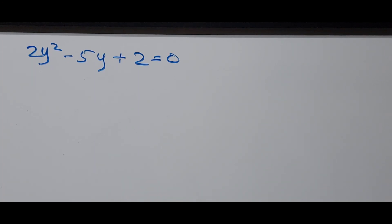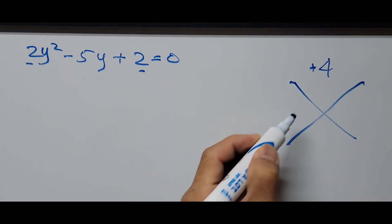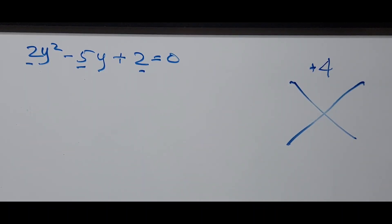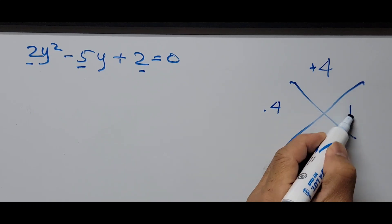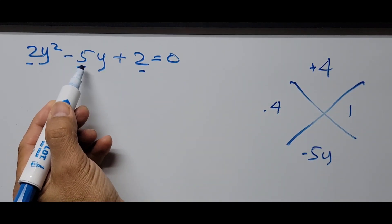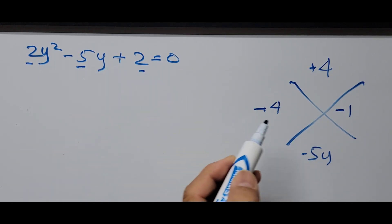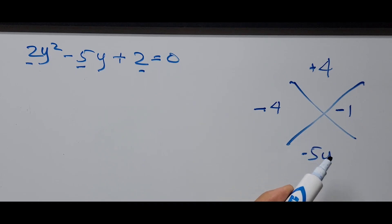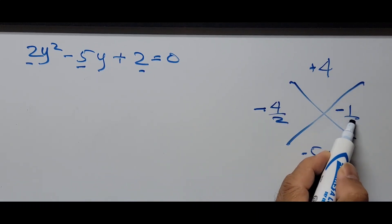I'm choosing factoring. For the AC method, 2 times 2 is 4 (positive), and the middle term is negative 5y. The factors of 4 are 4 and 1, or 2 and 2. Since the middle term is negative 5, we need negative signs on the factors. Multiplying negative 4 by negative 1 yields positive 4. Since the leading coefficient is 2, we divide the bottom by 2, giving negative 2.